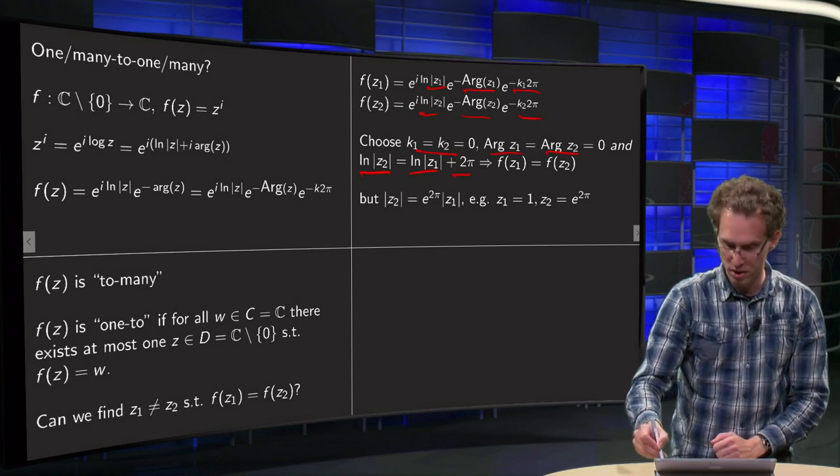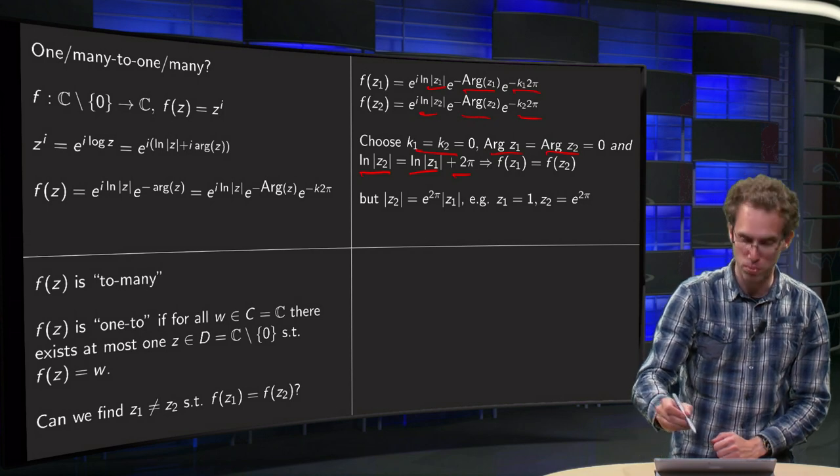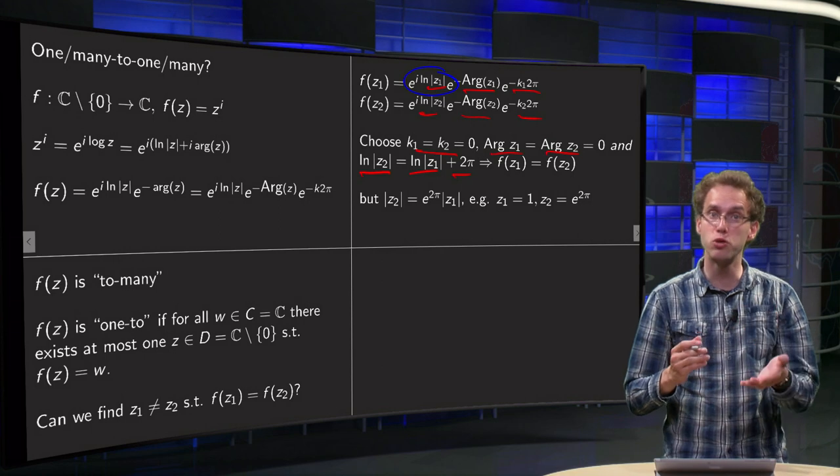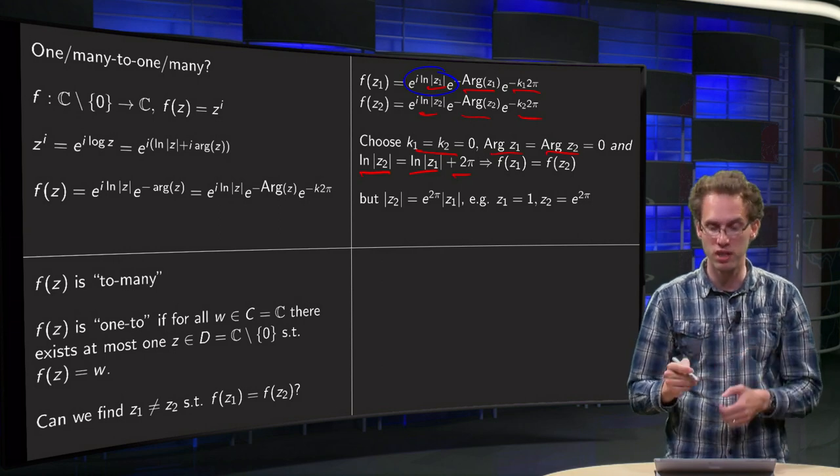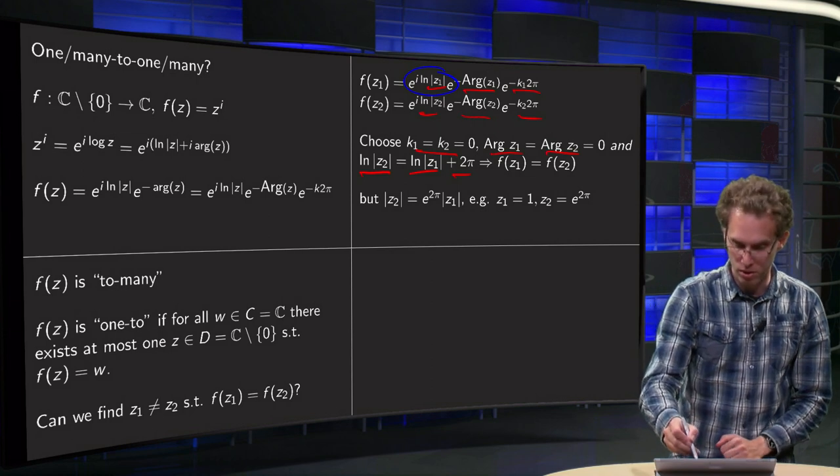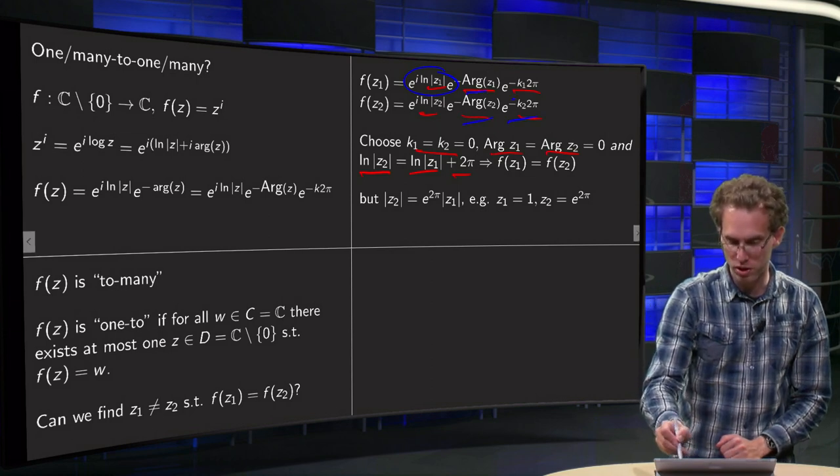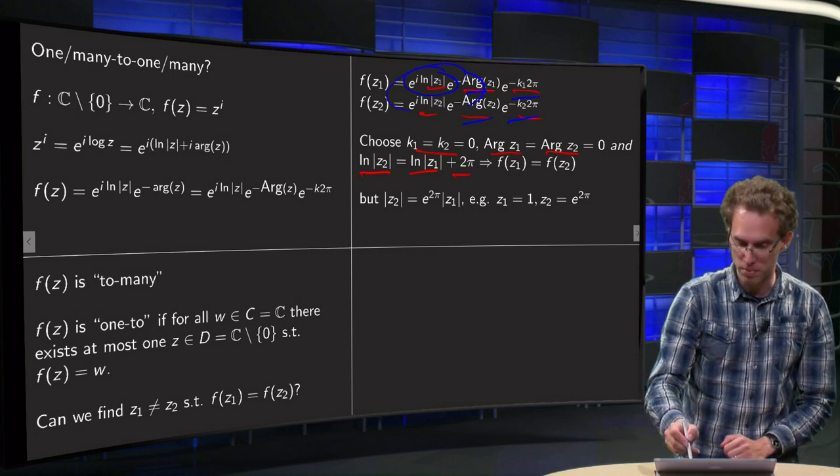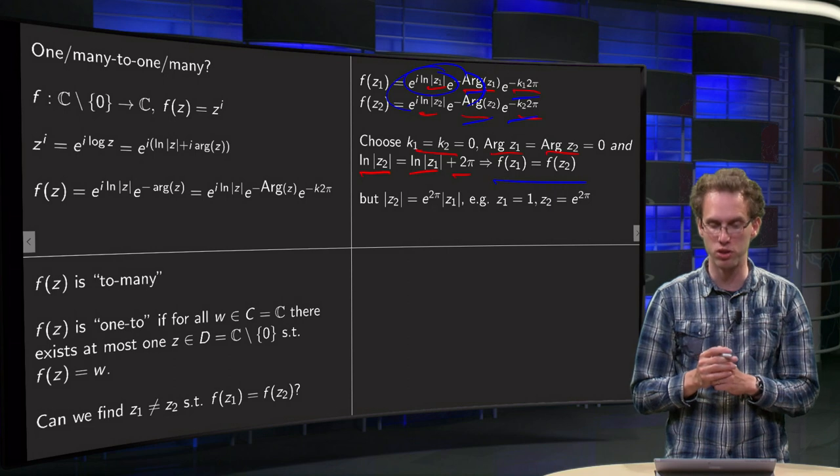Well, we have to set the modulus such that ln|z2| equals ln|z1| + 2π. And why does this work? This additional factor of 2π will yield e^(2πi) = 1, so you won't see it in the function. That means with this choice, those arguments are the same. Those parts are the same. And these parts in the function are also the same, which means the function values are the same.